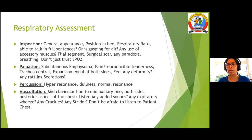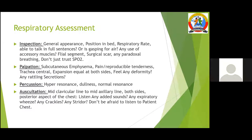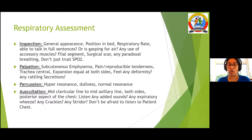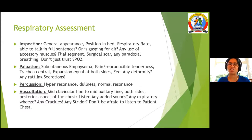Auscultation: listen from the mid-clavicular region to the mid-axillary line on both sides alternately, listening for any added sounds. For example, expiratory wheeze is a lower respiratory sound; stridor is an upper respiratory sound. Listen for crackles or crepitations — fine or coarse. The more you listen to patients' chests, the better your understanding of these different sounds.